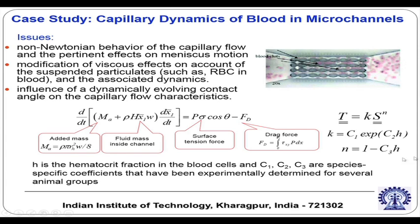As pointed out in the previous lecture, the t-star terms can be neglected under certain situations, so t equals k times s to the power n, where t and s are stress and rate-of-deformation dyadics. Now k and n depend on several parameters; one important parameter is called the hematocrit fraction, which is essentially the volume fraction of the red blood cells. So k depends on h, where h is the hematocrit fraction.